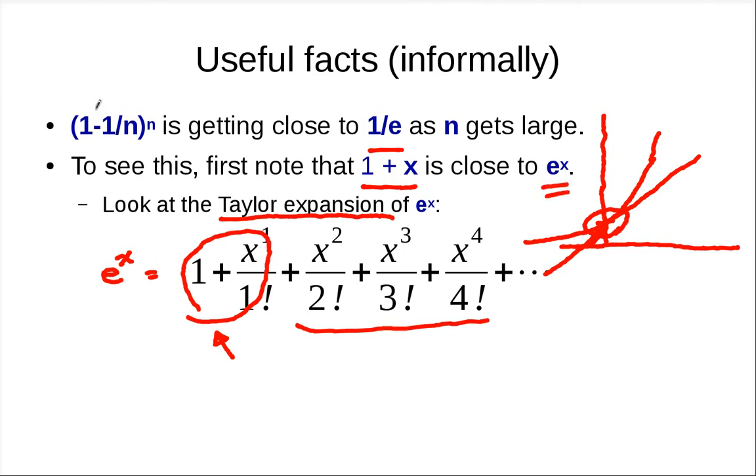So if you put 1 minus 1 over n, this one is very close to e to this term. It's close to, this is 1 plus minus 1 over n, right? So it's close to this term.